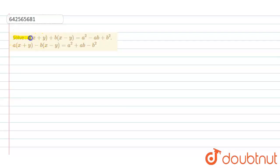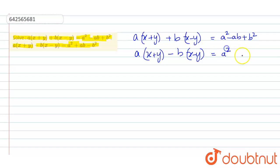Hello everyone, the given question is solve a(x+y) + b(x-y) = a² - ab + b² and the other equation is a(x+y) - b(x-y) = a² + ab - b². The given two equations are a(x+y) + b(x-y) = a² - ab + b² and the other one is a(x+y) - b(x-y) = a² + ab - b².